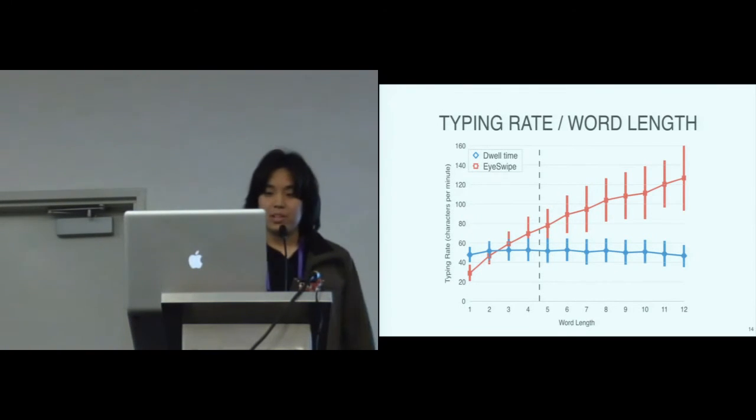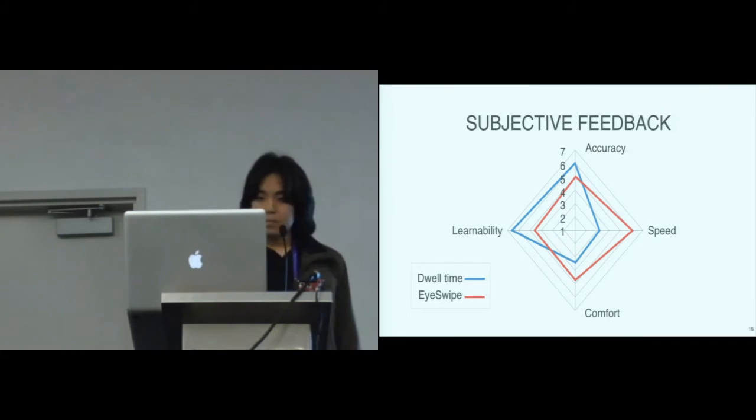With iSwipe, the user has to reverse cross the first and last letters of the word and only glance at the vicinity of the middle letters. For this reason, we expected longer words to have a higher text entry rate in characters per minute. So in this graph, we show the mean and standard deviation for the typing rates for each word length from one to twelve. And the dashed line shows the average typed word length in the experiment. The entry rates for dwell-time were expected to be approximately constant for all word lengths because each key has to be typed individually.